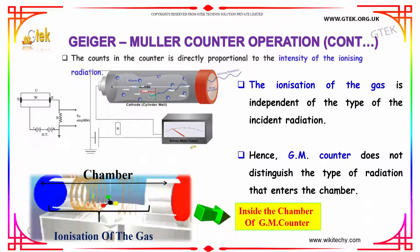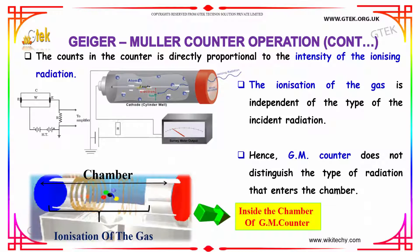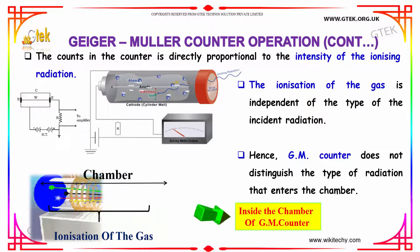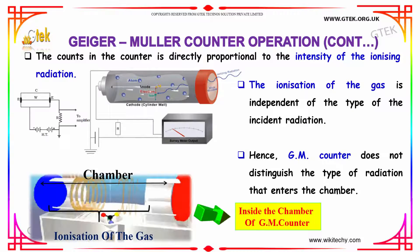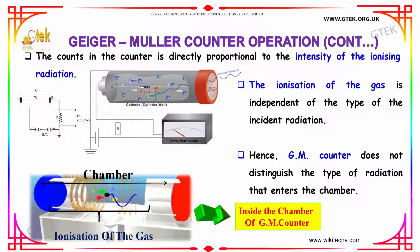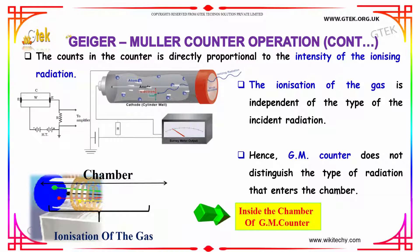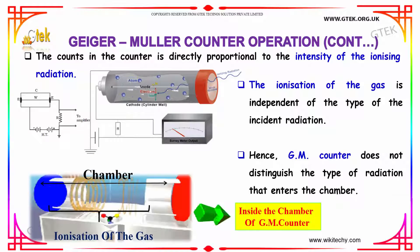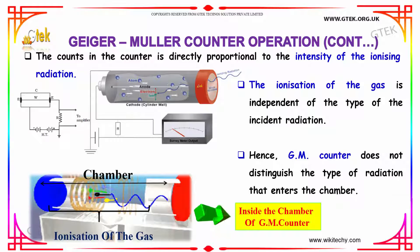The ionization of the gas is independent of the type of the incident radiation. Hence, the Geiger-Muller counter does not distinguish the type of radiation that enters the chamber. The count in the counter is directly proportional to the intensity of the ionizing radiation.